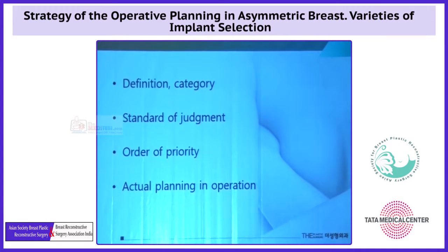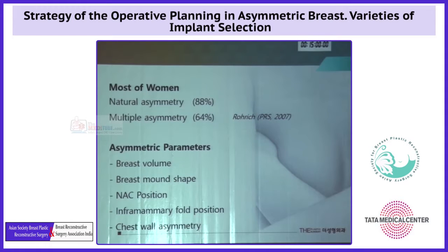Today's presentation includes categorization, standard of judgment, and priority in actual planning in asymmetric breast augmentation. Dr. Lowry published an article about breast asymmetry in 2007. According to the article, most patients have breast asymmetry, and about 64% of patients have multiple asymmetry.